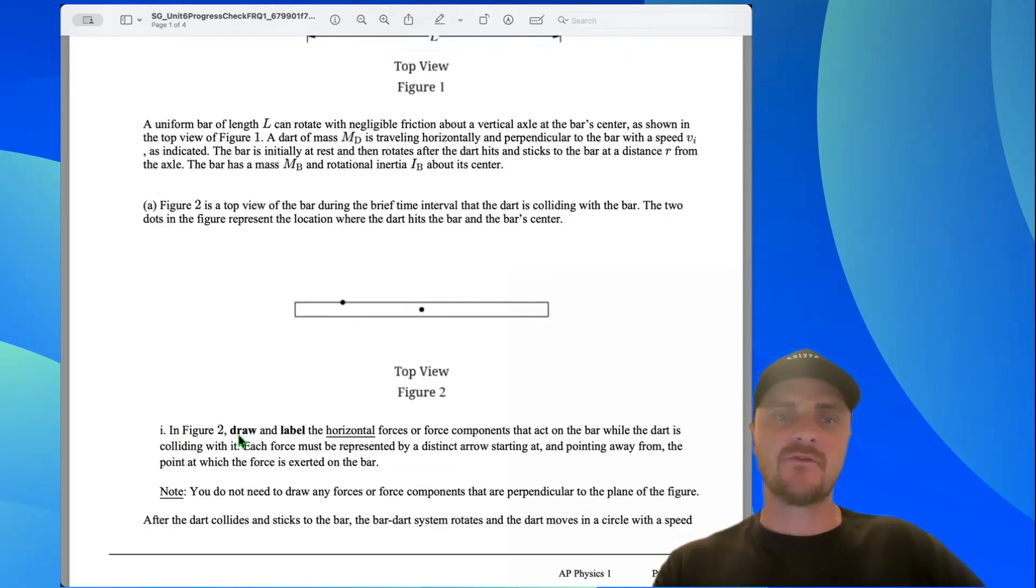Part i of A: In Figure 2, draw and label the horizontal forces or force components that act on the bar while the dart is colliding with it. Each force must be represented by a distinct arrow starting at and pointing away from the point at which the force is exerted on the bar. We're only looking for forces that are being exerted on the bar.